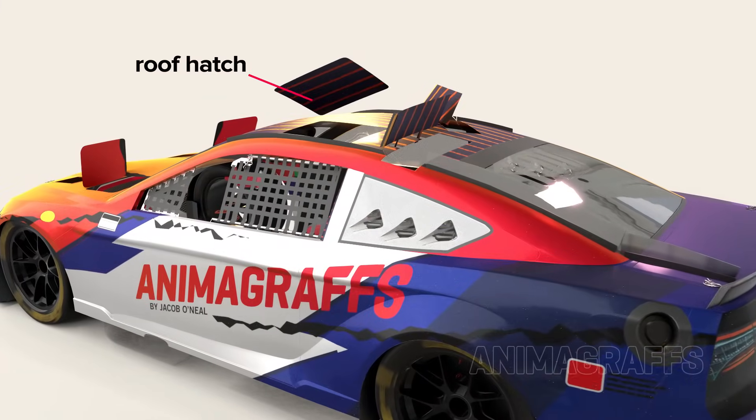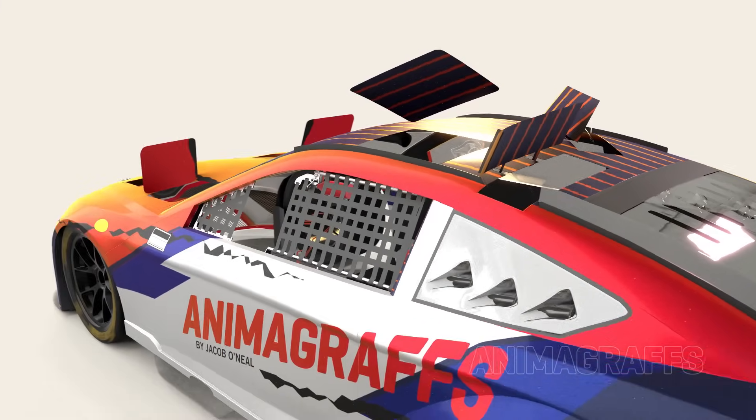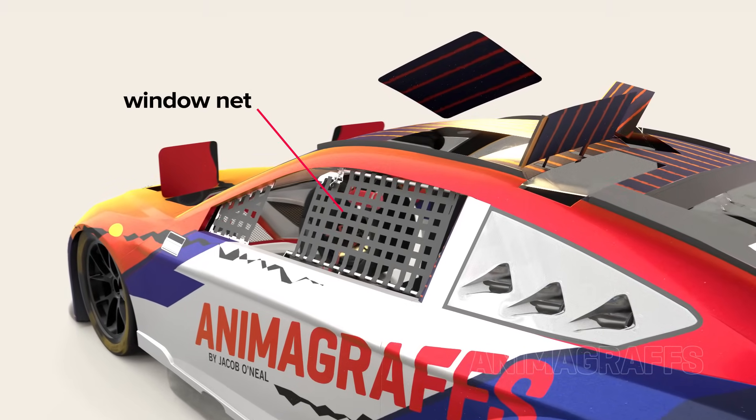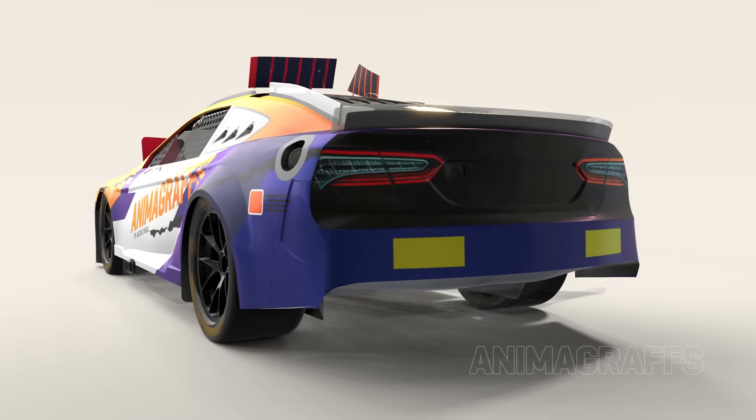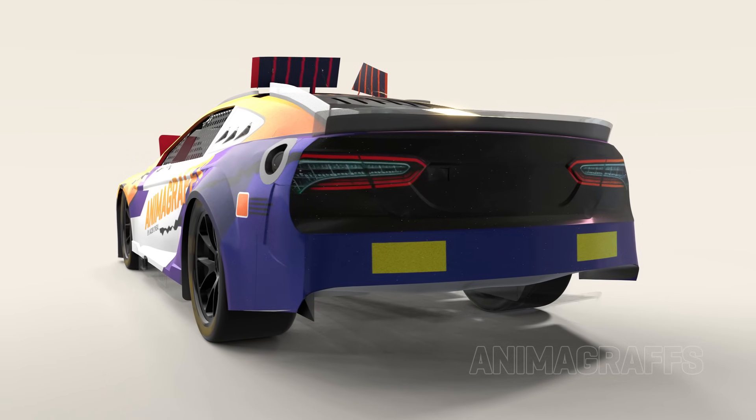There's a roof hatch directly above the driver for emergency exit. There's no window on the driver's side. A window net keeps the driver inside the vehicle and large debris out. Rookie drivers are required to have yellow stripes on the rear bumper to alert other drivers.